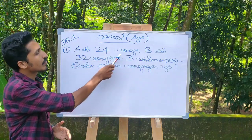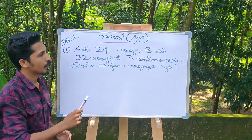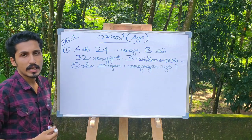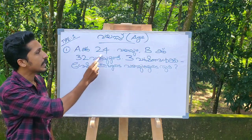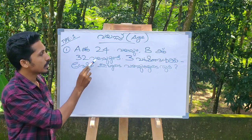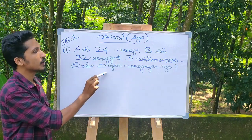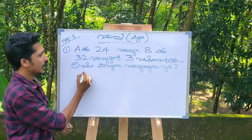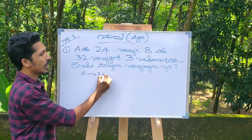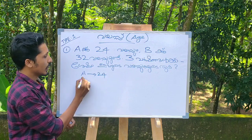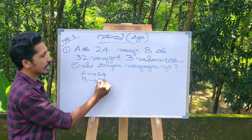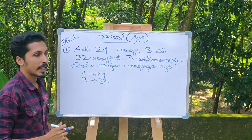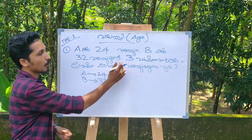If A is 24 and B is 32, in three years I have to find the ratio to be 3. If you have A is 24 and B is 32, after three years we have to ask the ratio to be 3. If we ask the question — how is 24? How is 30? The ratio we are using is 3.